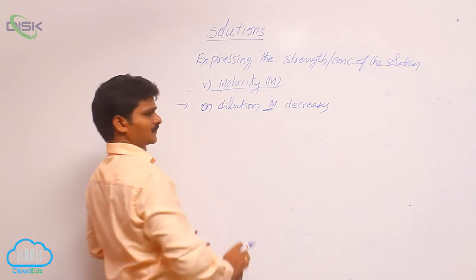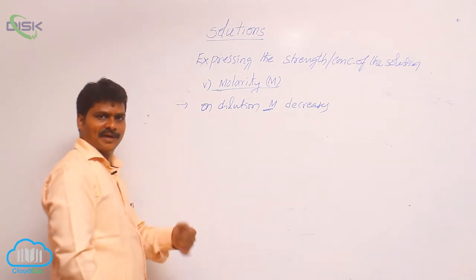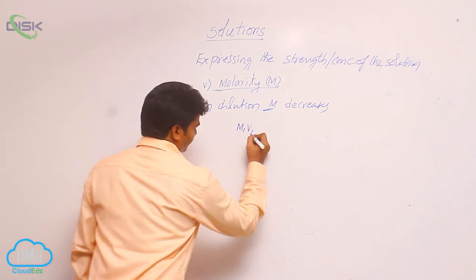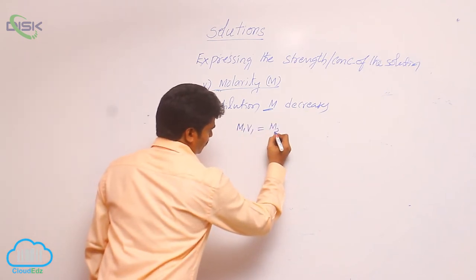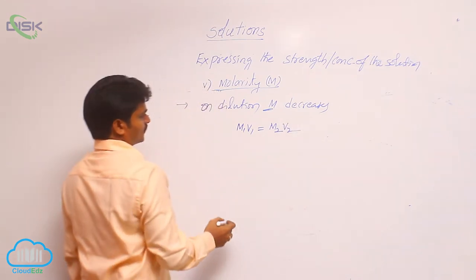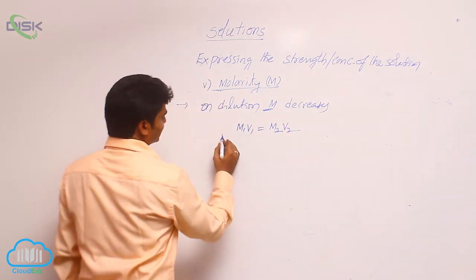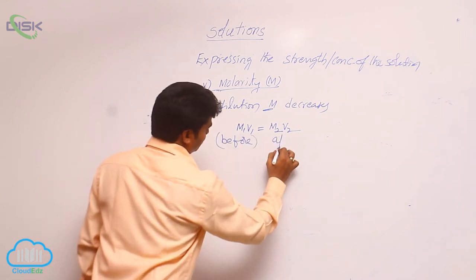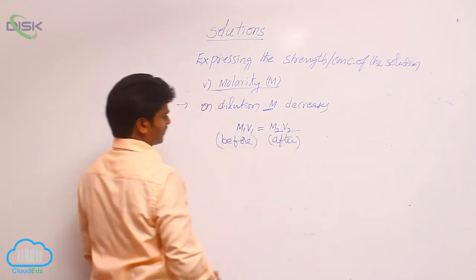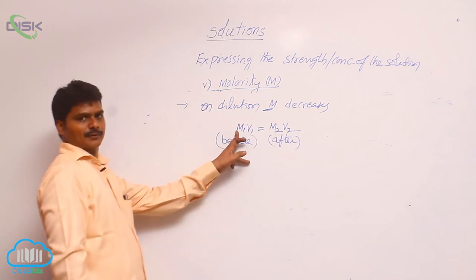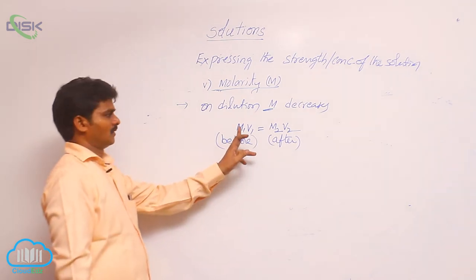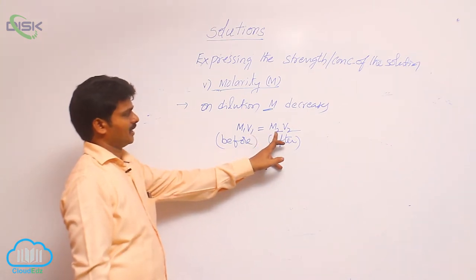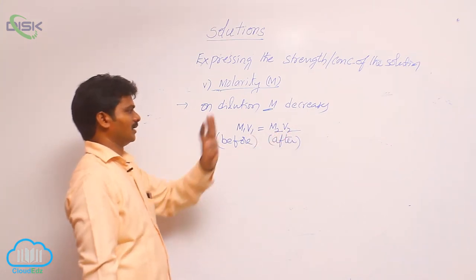How to find out the molarity of a diluted solution? For that, there is a formula: M1V1 = M2V2. Here, M1 and V1 are the terms before dilution, and M2 and V2 are the terms after dilution — that means molarity before dilution, volume before dilution, molarity after dilution, and volume after dilution.